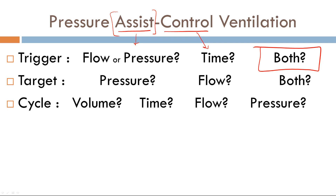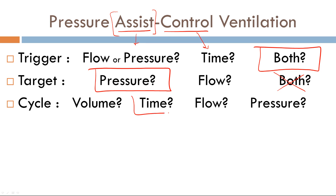What is the target variable in pressure assist-control ventilation? The target variable can be either pressure or flow — you can never have both as a target variable, ever, in any mode of ventilation. The target variable can only be pressure or flow. In pressure AC ventilation, the target variable is pressure. The cycle variable in pressure assist-control ventilation is time.